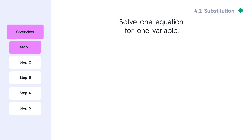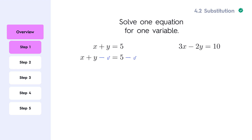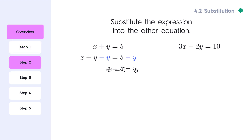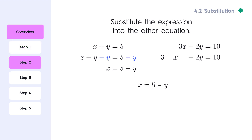The first step is to solve for a variable in one equation. We take one of the two equations and solve for either x or y. This makes it easier to substitute into the second equation. Next, we take the expression we found in step one and substitute it into the second equation. This allows us to solve for the value of a single variable.